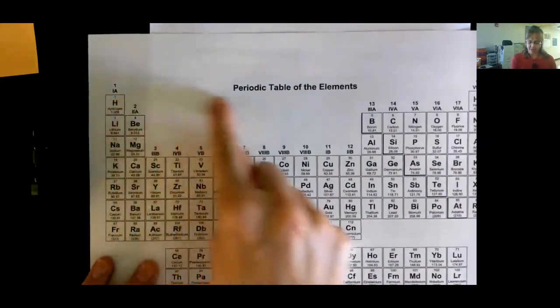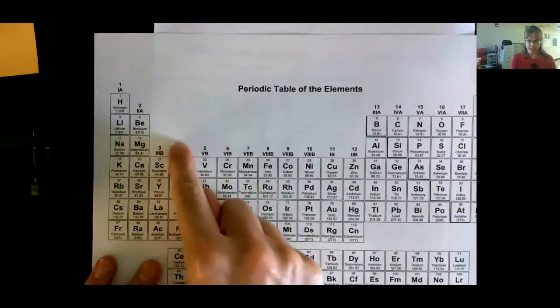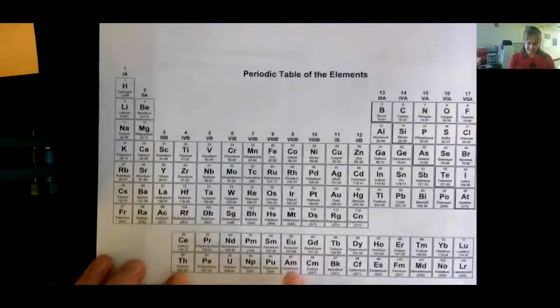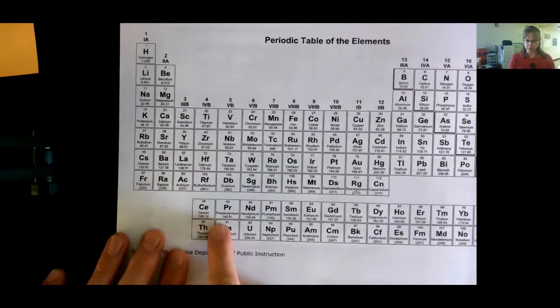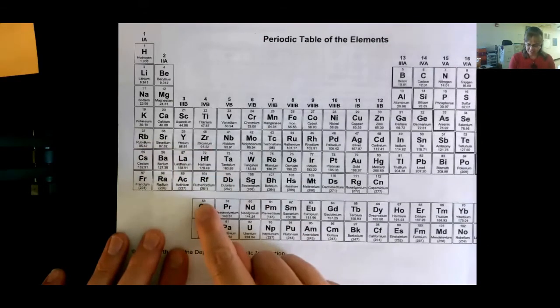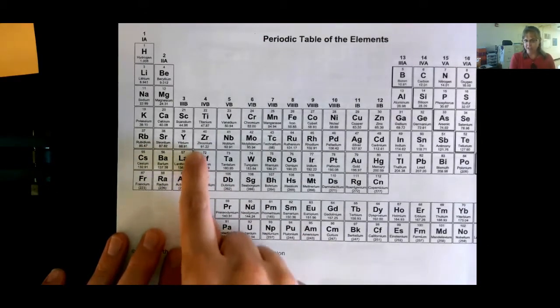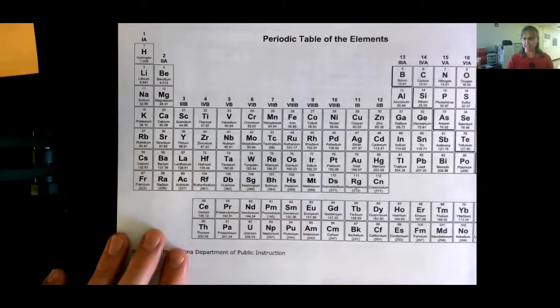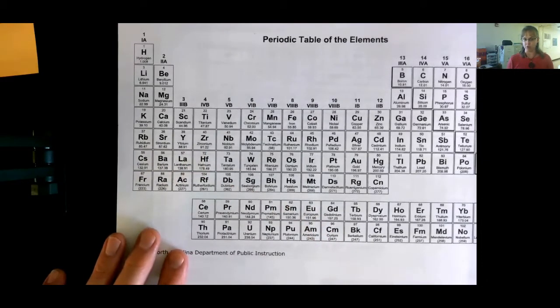Start at the top and count one, two, three, etc. But don't count the bottom two rows because they actually belong up here. Elements 57, 58 - see, they ought to squeeze right there. So don't count these when you count your rows or periods.